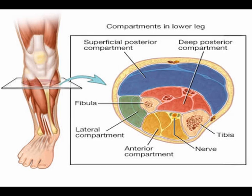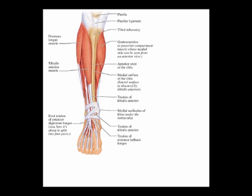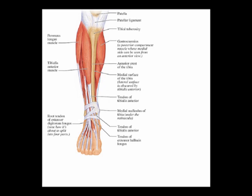Compartment syndrome can occur in numerous locations, including the thigh, forearm, hand, wrist, and lower leg. In the lower leg, it can occur in any of the four compartments: anterior, lateral, superficial posterior, or deep posterior. Today, I am speaking about compartment syndrome in the front of the lower leg, known as tibial anterior compartment syndrome.